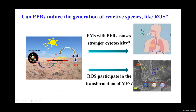As I mentioned above, EPFR can induce a large amount of ROS formation. So the key question is: can photo-aged microplastics with EPFR cause greater biological toxicity? On the other hand, if the EPFR can induce the formation of ROS, the produced ROS may also participate in the transformation of microplastics.